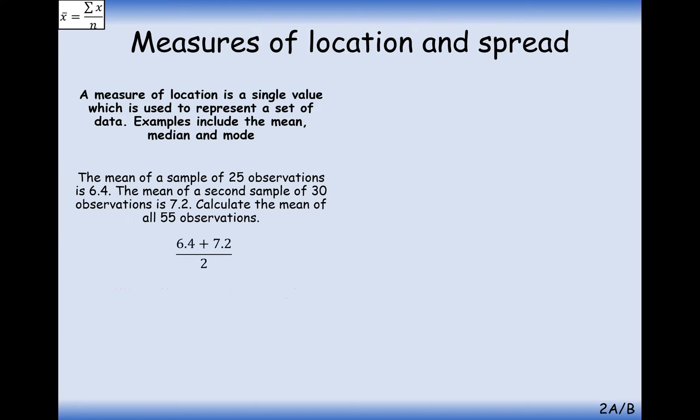Surely it could just be work out the middle value between those two means. But this isn't quite right. What we should really have is, because we have more values in this group of 30, the mean should be more skewed towards the 7.2 than the 6.4. If we've only got 25 observations here and 30 observations here, then surely these 30 observations should carry more weight than these 25 pieces of data.